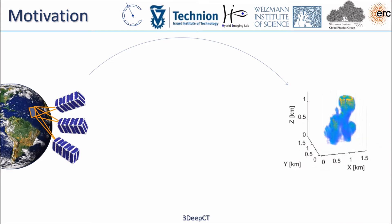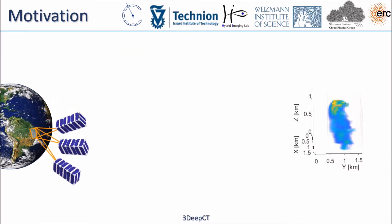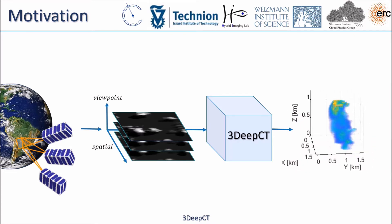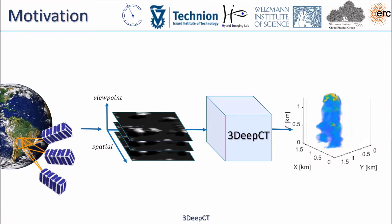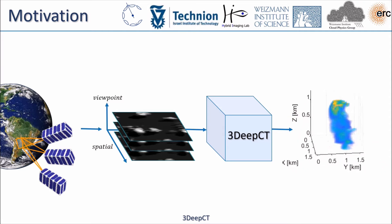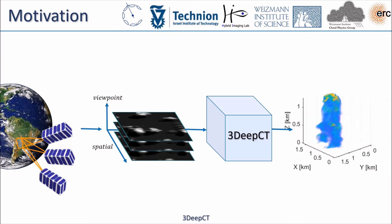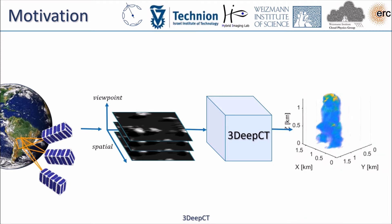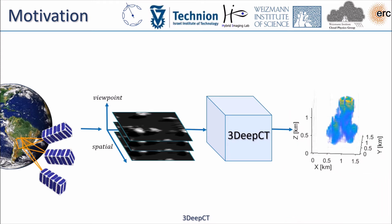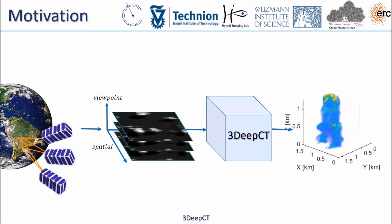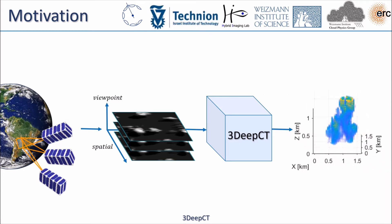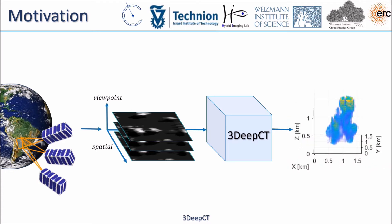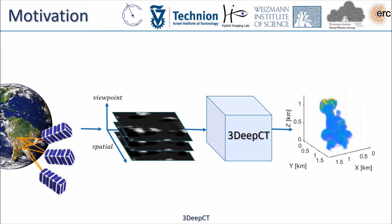Our proposed learning-based system 3DEEPCT achieves this task. Satellites acquire images that are the input to the neural network, and the output is 3D recovery of the liquid water content in the cloud field. Previous state-of-the-art methods use explicit physics-based optimization to do this recovery. They are much slower than 3DEEPCT and do not exploit priors on the nature of clouds, which can be learned from training data. We want to use deep learning for recovery within a fraction of the time that physics-based methods take.